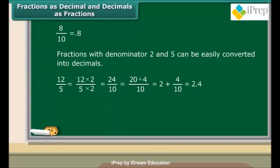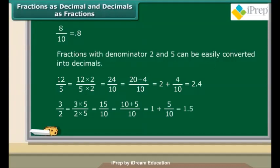Consider another example: convert 3 upon 2 into a decimal. The denominator of the fraction is 2. To know the number of tenths involved, multiply and divide the fraction by 5. Thus, the new fraction is 15 upon 10. So we have 1 and 5 tenths, which make it 1.5.